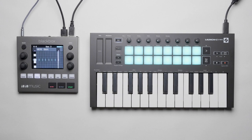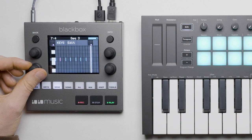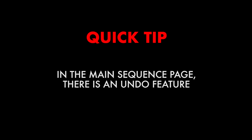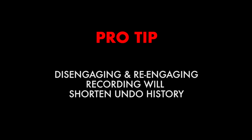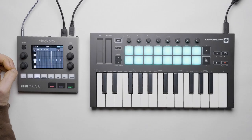So let's play some hi-hats. We can see that a few are slightly off, and we can zoom in and adjust them if we want, or we can leave them and have a loose feel. Quick Tip: if we don't like our performance, we can press undo in the main sequence page. This will clear only the last set of notes that were recorded.